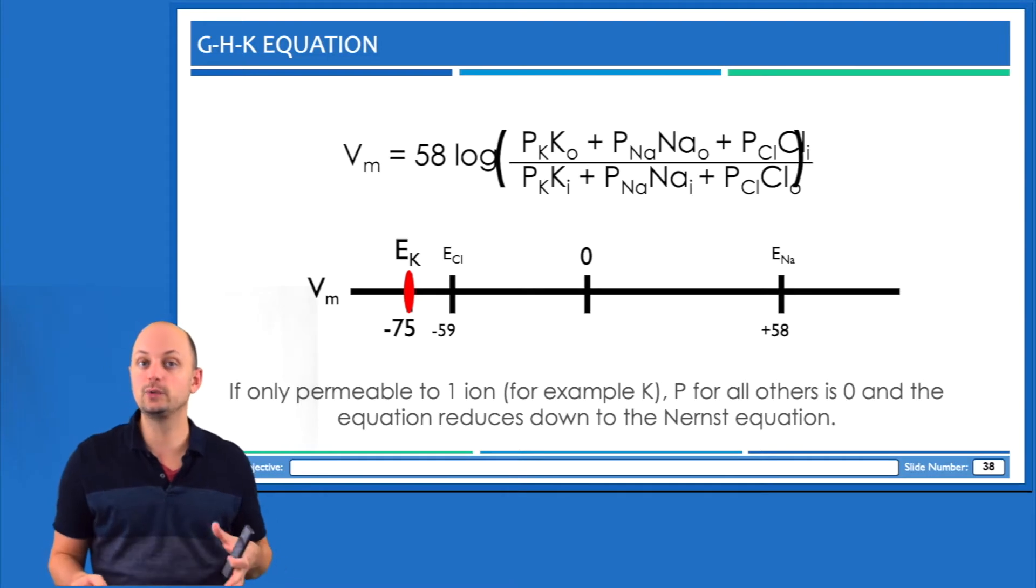The major difference between GHK and Nernst though, is that the GHK equation takes into account the permeability of the ions. That's represented by the letter P in the equation.